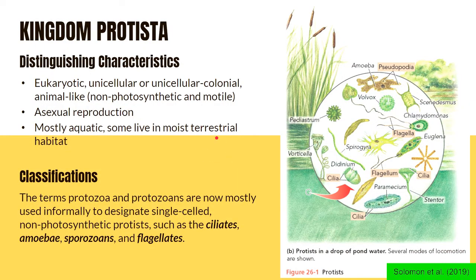We have already discussed the first two kingdoms in the previous video for domain archaea and domain bacteria. In this video, we will discuss the remaining five eukaryotic kingdoms. The first one would be Kingdom Protista, and their distinguishing characteristics are as follows.